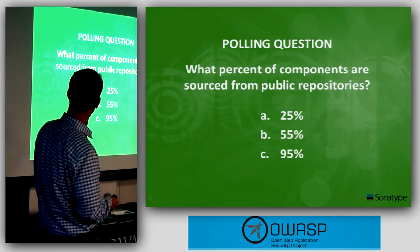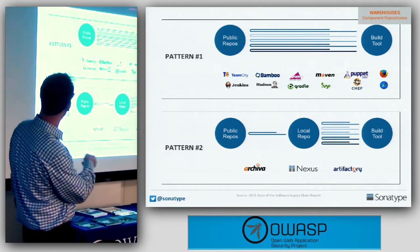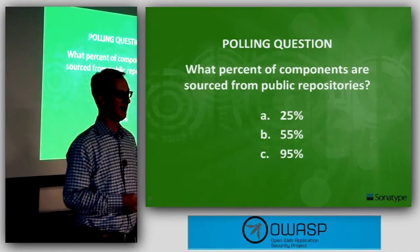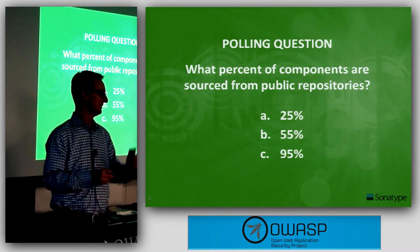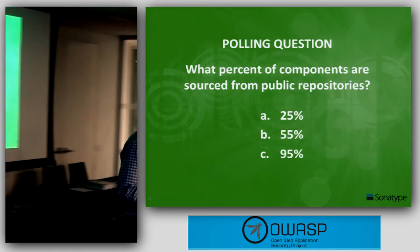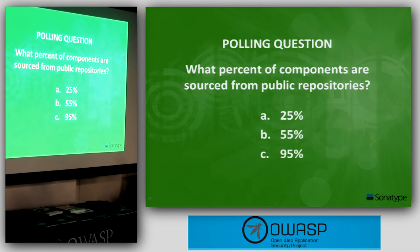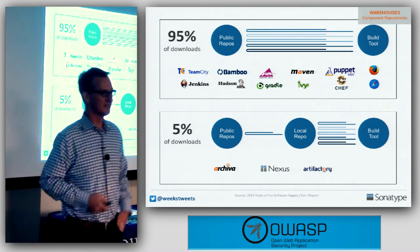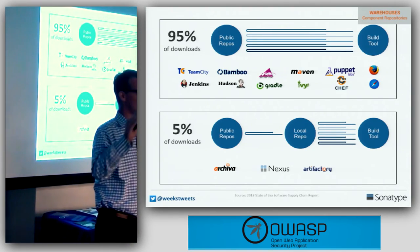What percentage of components are sourced from public repositories — pattern one — versus local repositories? The answer is 95%. 95% are sourced directly from the central repository.